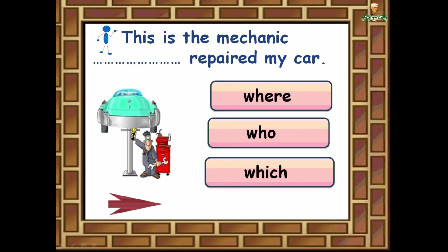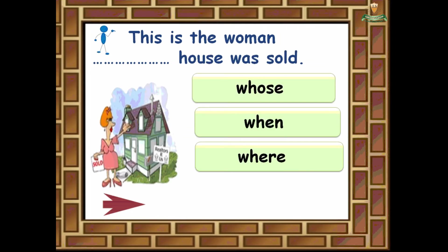Number five: 'This is the mechanic ___ repaired my car.' The mechanic is a person, so the correct answer is who.